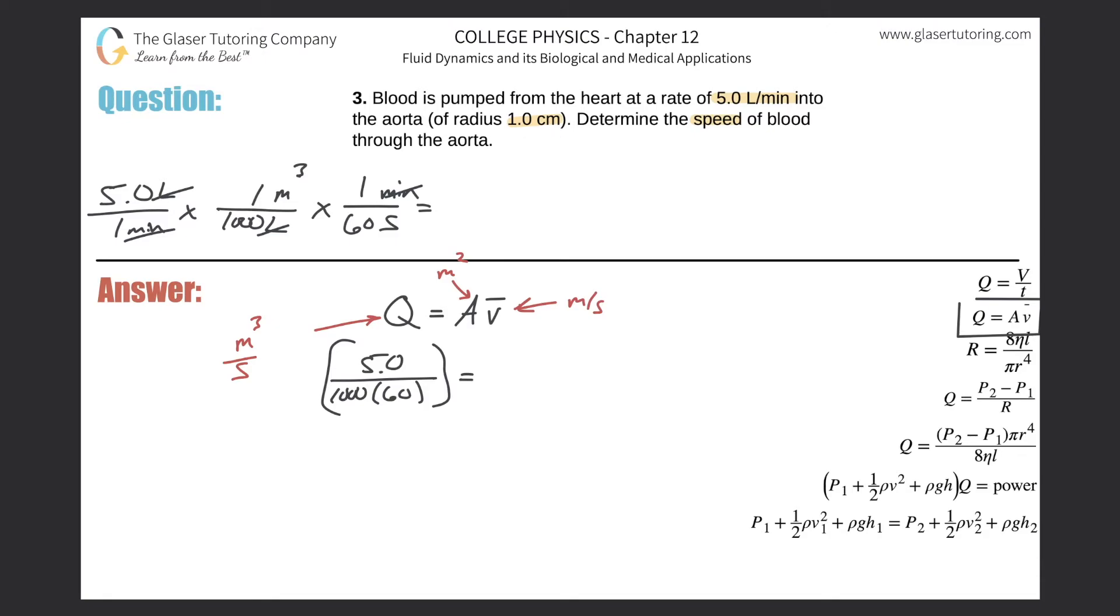the aorta is a cylindrical object. To find the cross-sectional area, it's simply pi r squared. So plugging in for area, it's pi multiplied by the radius. We need it in meters, so divide by 100. Square that, and then multiply this